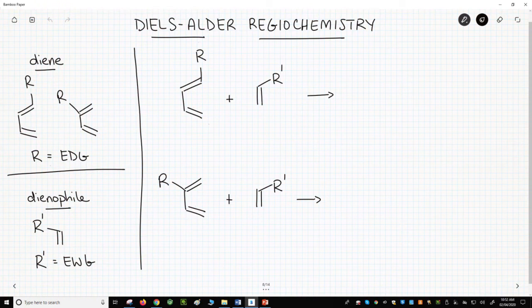Looking to the left of the screen, the diene and dienophile of the Diels-Alder reaction often bear R-groups. R-groups on the diene are generally electron-donating groups. EDGs include things like alkyl, amino, and oxy groups.